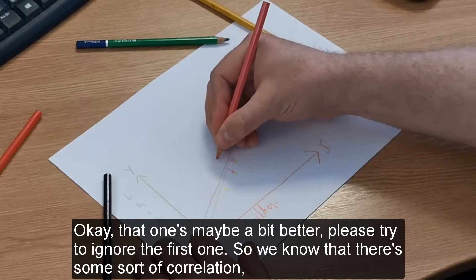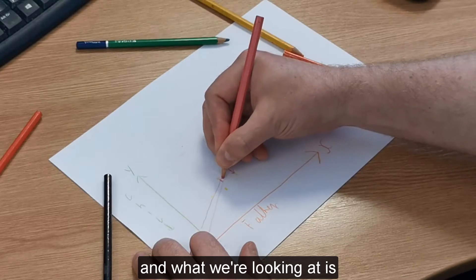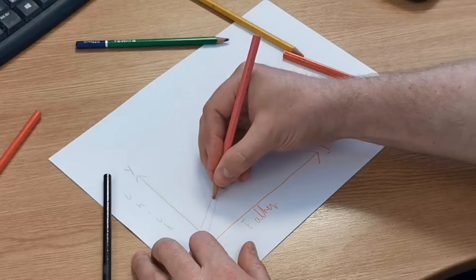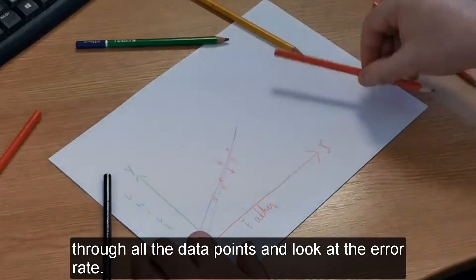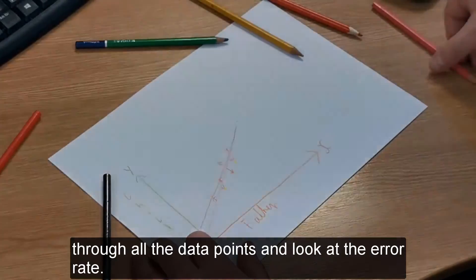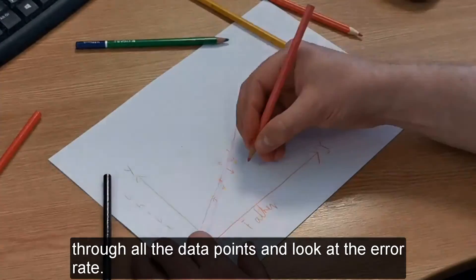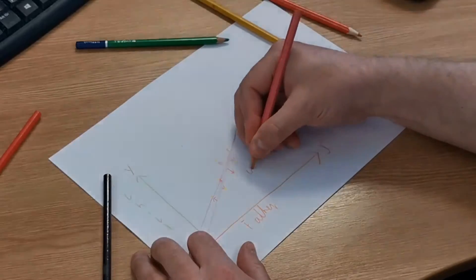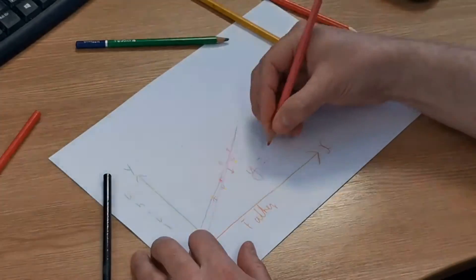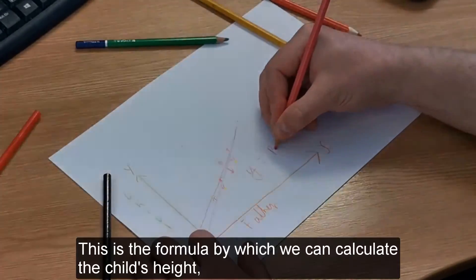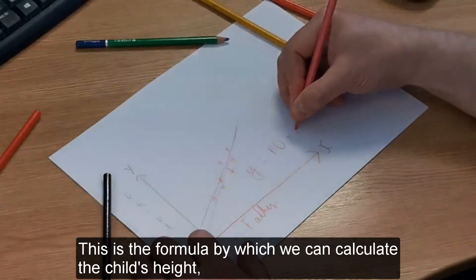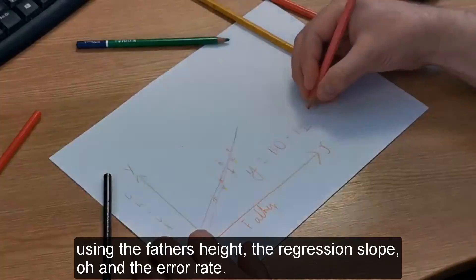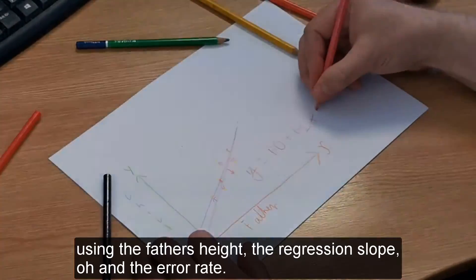We know there's some sort of correlation, and what we're looking at is fitting the line of best fit through all the data points and looking at the error rate. This is the formula by which we can calculate a child's height using the father's height, the regression, and the error rate.